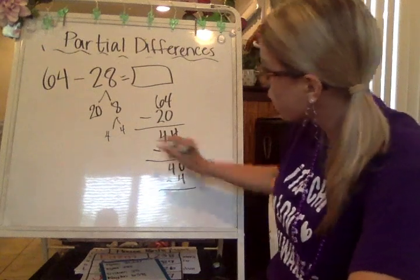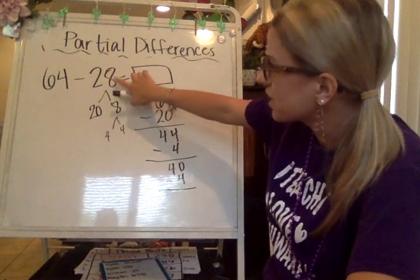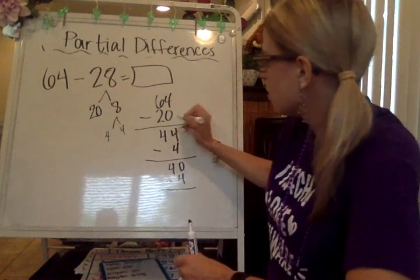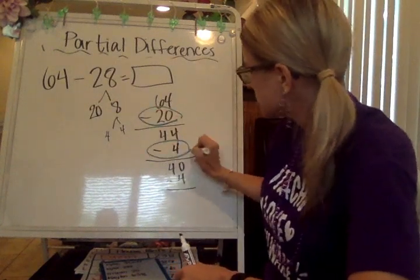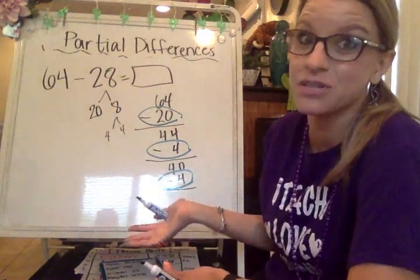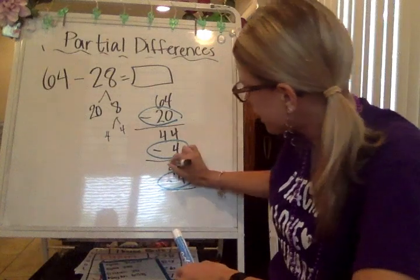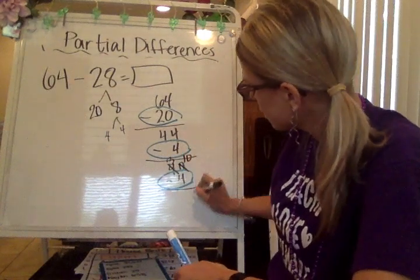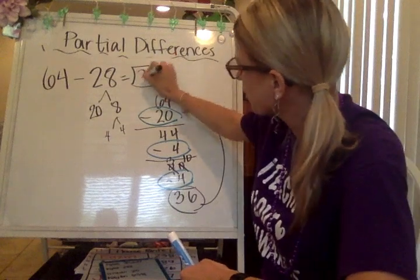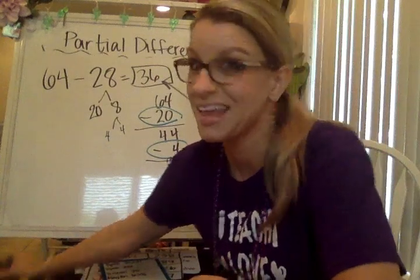Now I have to subtract the remaining 4. If I want to make sure I got all of 28 subtracted, I can look back and say: here's 20 plus 4 plus 4, that equals 28. That's how I can double-check I've done this correctly and haven't forgotten any steps. So 40 minus 4 is 36. The difference is 36, and I used partial differences to solve that.